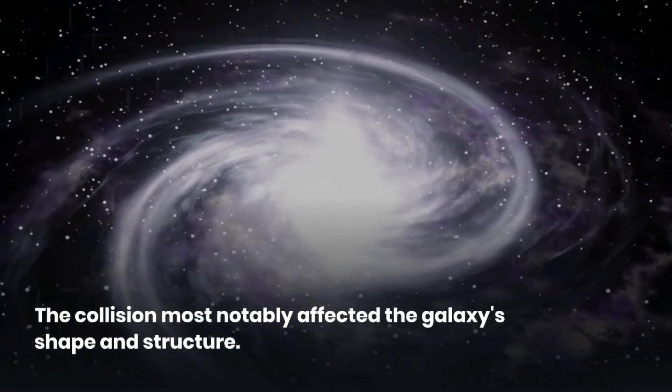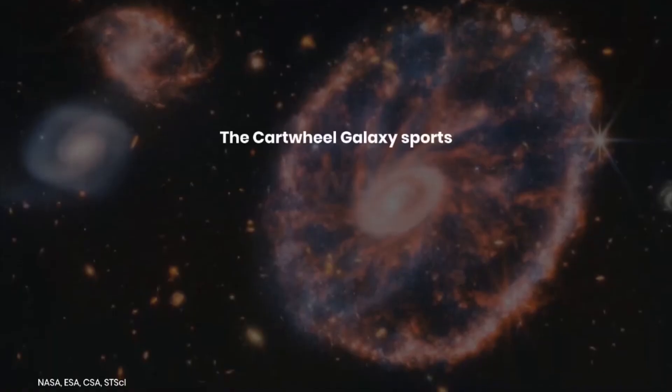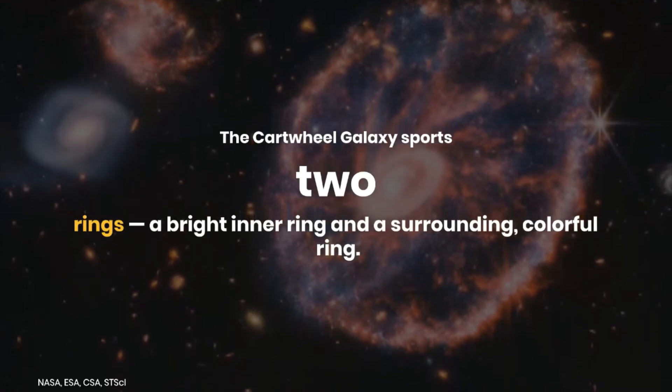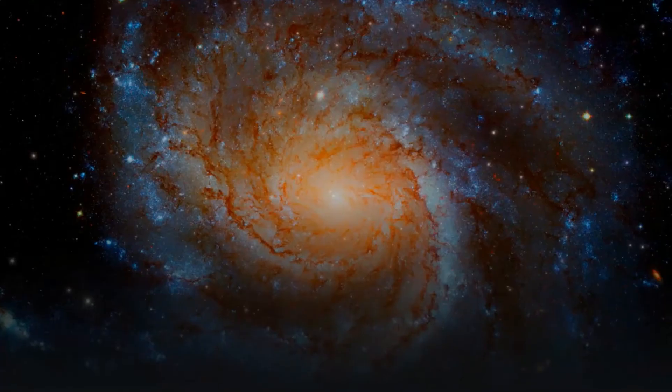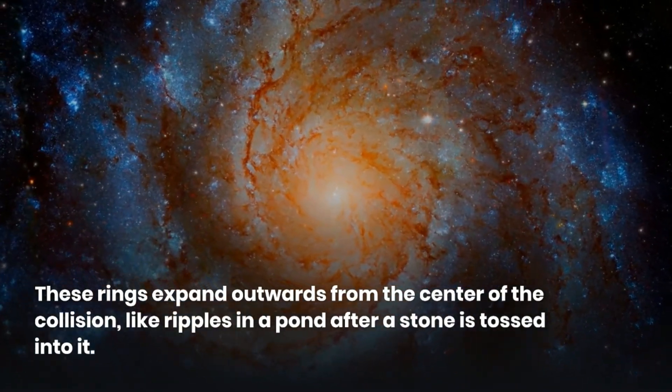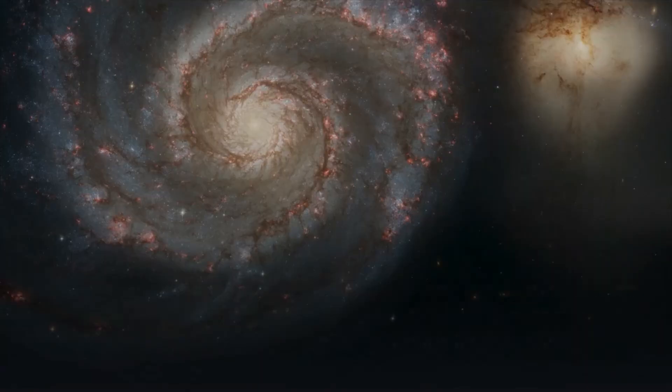The collision most notably affected the galaxy's shape and structure. The Cartwheel Galaxy sports two rings: a bright inner ring and a surrounding colorful ring. These rings expand outwards from the center of the collision, like ripples in a pond after a stone is tossed into it.